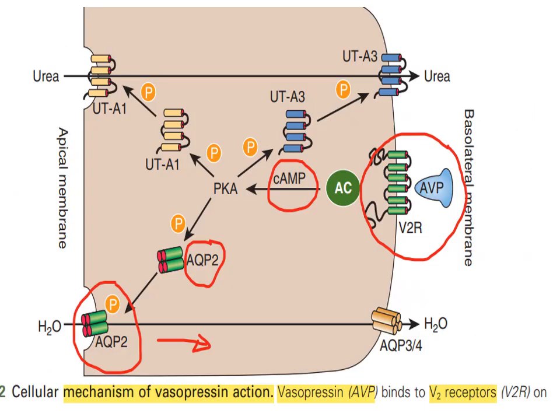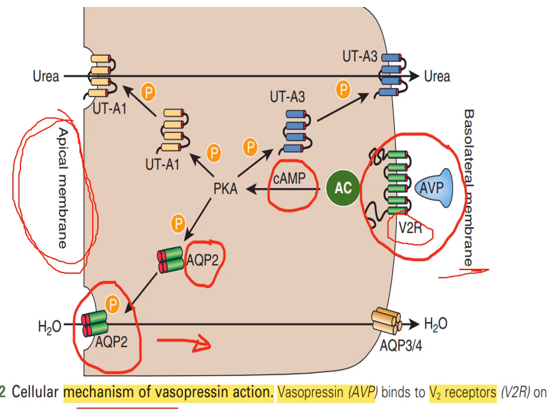How does arginine vasopressin (AVP) or ADH act in the kidney? This is the renal tubular cell — this is the basolateral membrane and this is the apical membrane, which is the lumen of the renal tubule. It acts on the basolateral membrane side, where the ADH binds to its receptor. We have two types: vasopressin 1 (1a and 1b) and vasopressin 2. The main receptor in renal tubular cells is the vasopressin 2 (V2) receptor.